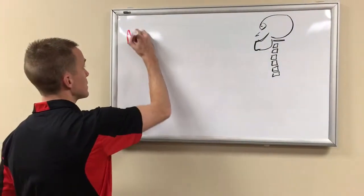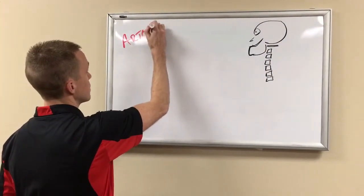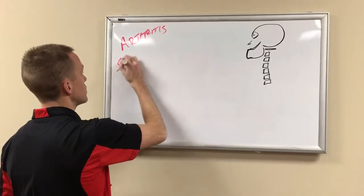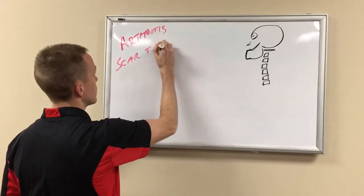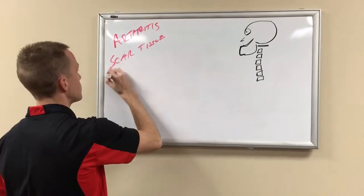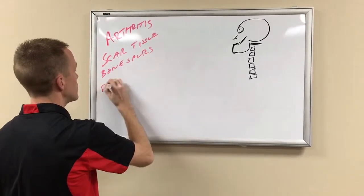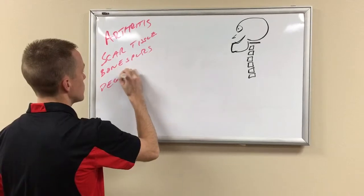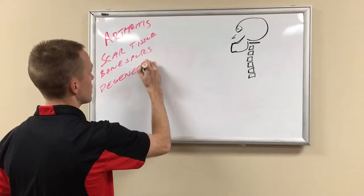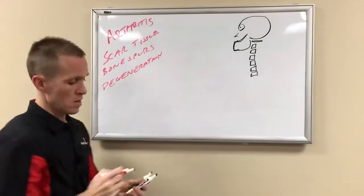So you've heard of things like arthritis, scar tissue, bone spurs, and degeneration. What are those things? Have you ever thought for a moment? Well, I'm going to tell you.